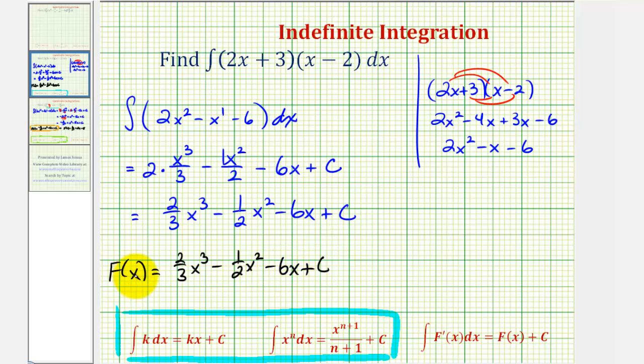Which means if we found the derivative of big F of x, it would be equal to the original integrand here in factored form, or expanded form, it would be here as two x to the second minus x minus six. So it may be helpful to take a moment and find the derivative of big F of x to verify that we did find this correctly. I hope you found this explanation helpful.